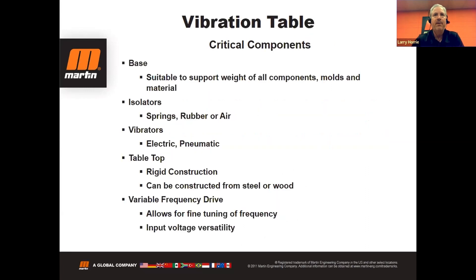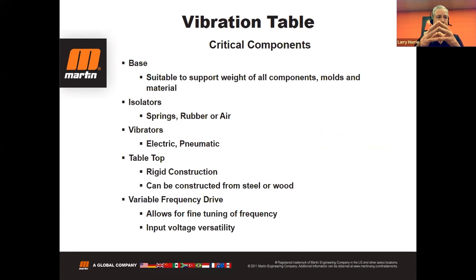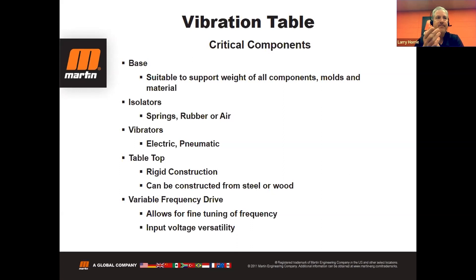The critical components of a vibration table are: a base suitable to support the weight; isolators; the vibrators, which can be electric or pneumatic; and a rigid tabletop — most commonly steel, though wood can be used — for uniform energy transfer. A variable frequency drive can also be added to allow fine-tuning of frequency and input voltage versatility.